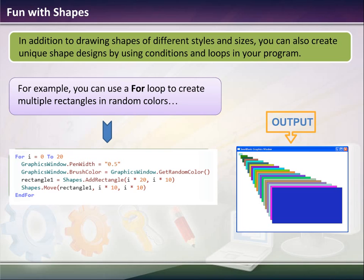In addition to drawing the shapes, we could do all kinds of fun things. We could get random colors. We could add, if we do a for loop, we can add rectangles. We can layer them on top of one another, and it creates an illusion like this box is coming forward.